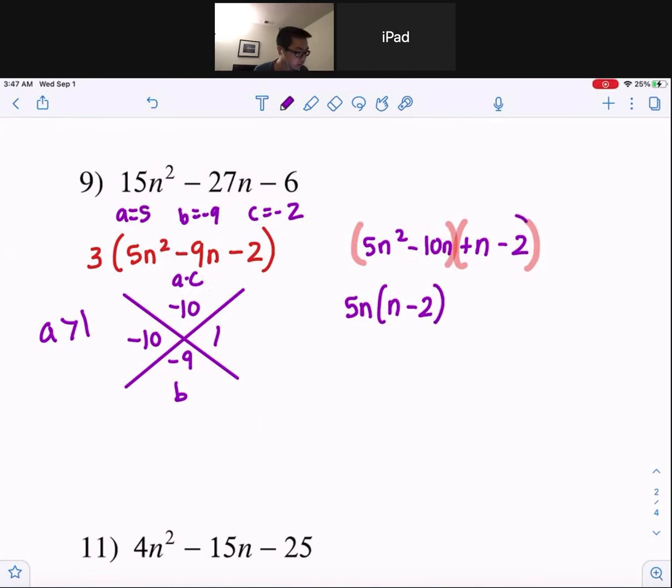Now, from the second grouping, notice there is nothing you guys can factor out. And if there's nothing you guys can factor out, the only thing you can do is just put a 1 out on the outside. And look, you guys, these match up. So, you guys can factor out n minus 2 out from both of them. And then, all you guys just have the leftovers, 5n plus 1.